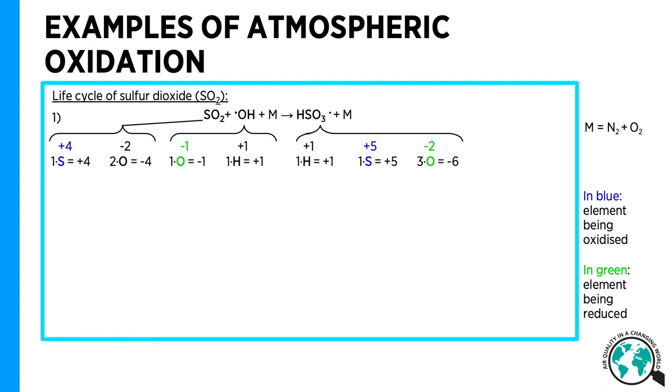M is a third body, most likely dinitrogen or dioxygen, removing excess energy.